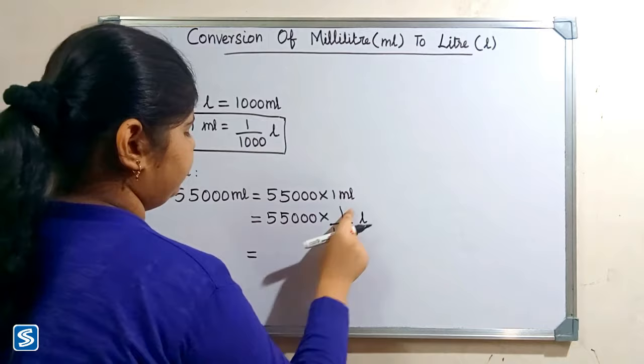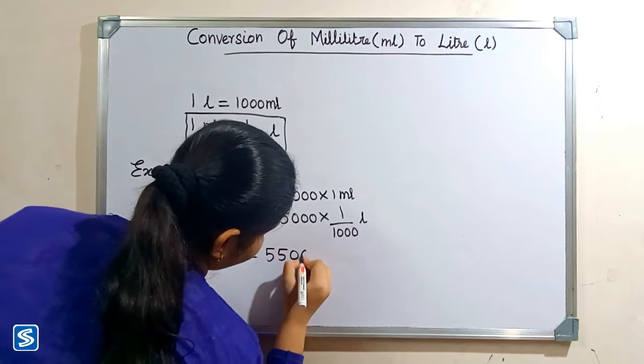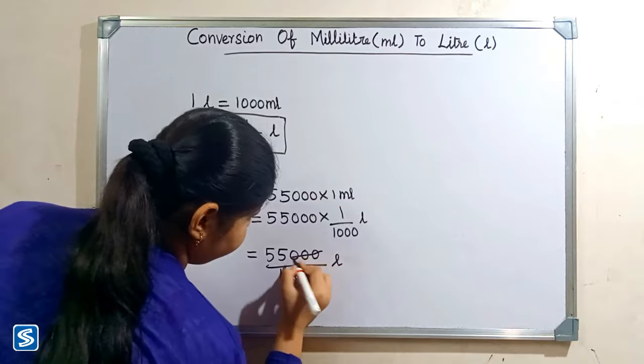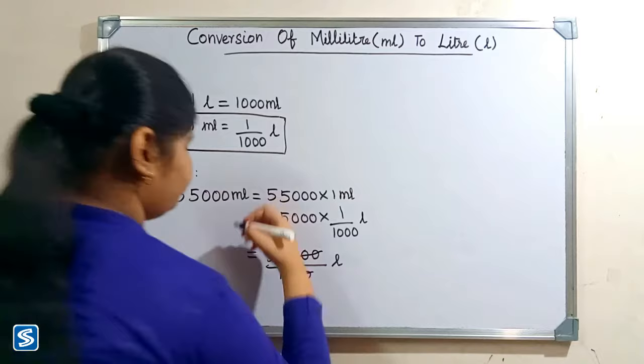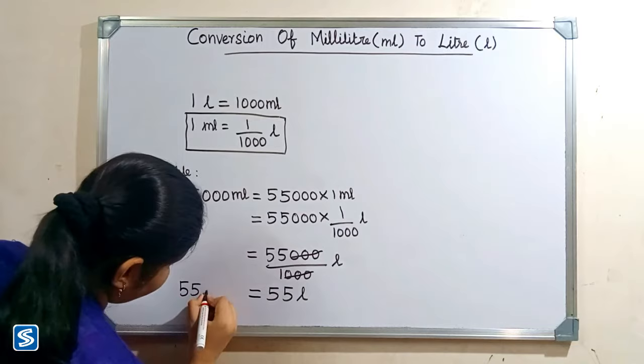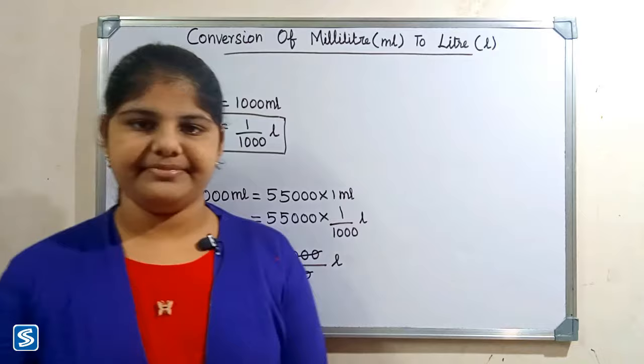Fifty-five thousand multiply one will be fifty-five thousand, so fifty-five thousand by one thousand liters. Here the zeros get cancelled, so when we divide fifty-five thousand by one thousand liters our answer will be fifty-five liters. So fifty-five thousand milliliters is equal to fifty-five liters.